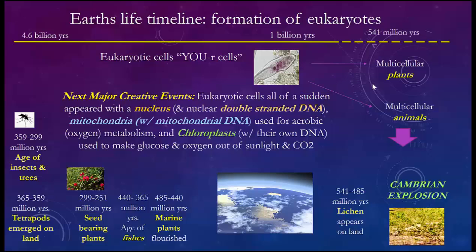Once you've done that, one form will have the nucleus, mitochondria, and chloroplasts — and they're going to become plants. The others will have the nucleus and mitochondria but drop the chloroplasts — and they'll become animals. Remember, anything green has chloroplasts. In about a billion years, getting down to 541 million years, all of a sudden you have the Cambrian Explosion, where all of the living creatures on Earth unfold right at that point.